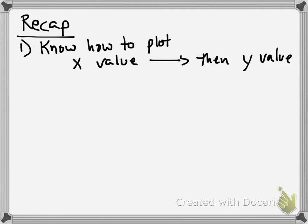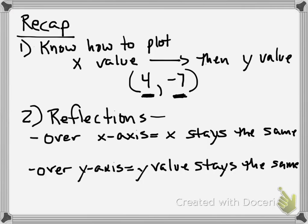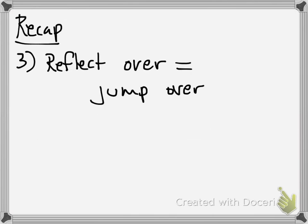Okay, a little recap. First, you've got to know how to plot points — you're going to plot the x value first, then the y value. So if we had the point 4, negative 7, you are going to plot that positive 4 first along the x axis, moving right of the origin, and then plot that negative 7 by going down below the origin 7 points. Now for reflections: if it is reflected over the x axis, the x value is going to stay the same. And the same holds true for the y axis — if it asks you to reflect over the y axis, the y value is going to stay the same. When it says to reflect over an axis, it's sort of like jumping over that axis — jumping over the x axis to the other side, or jumping over the y axis to the other side.